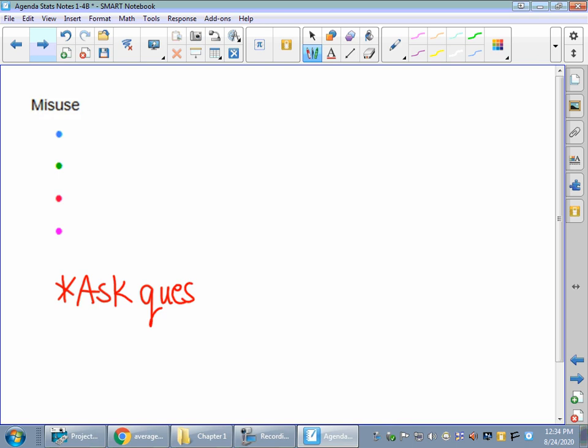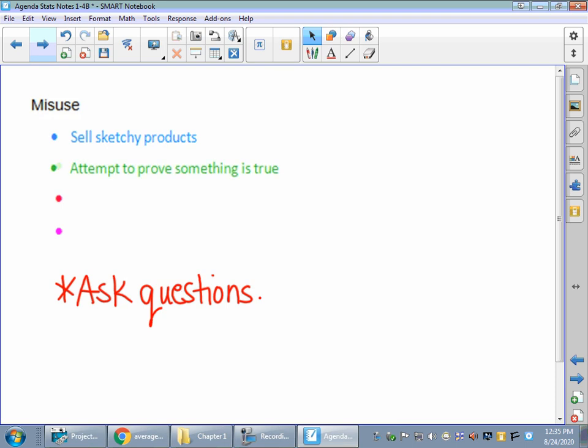You have to look beyond. Just like when you're online, please look for credible sources. Who is the source of that information? When we've got this, people who misuse are trying to sell perhaps sketchy products. Maybe they're attempting to prove something is true, which is a really big issue to talk about.